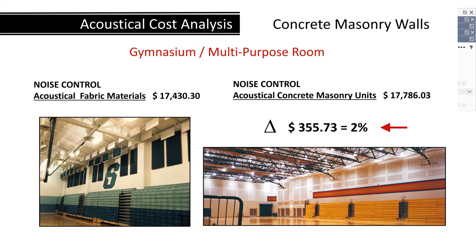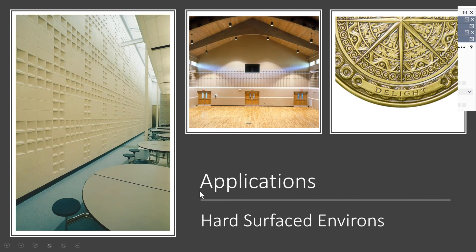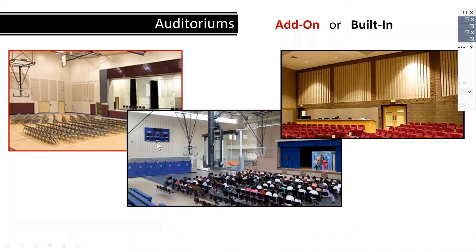These benefits are not only available to multipurpose rooms but apply equally well to other interior environments. Auditory clarity of stage performance is critical to success, and good auditoriums and theaters require noise control. Besides controlling reflection through absorption, acoustical masonry also provides load-bearing strength and structure to the building — not only absorbing noise, but holding up the roof and providing solid walls.